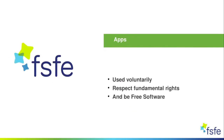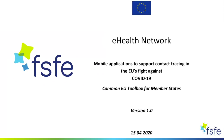You are probably all familiar with the corona tracing apps. At the very beginning of this debate, we said there have to be three things for successful apps: they have to be used voluntarily, they have to respect fundamental rights, and they need to be free software. At first, most governments tried to find proprietary, closed-source solutions just for their own country. But during this debate, governments easily understood that it was a better idea to go with free software solutions.